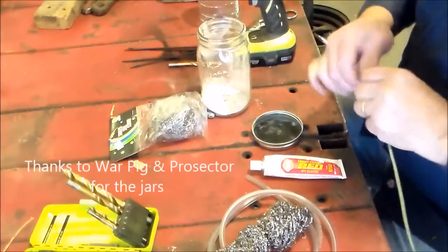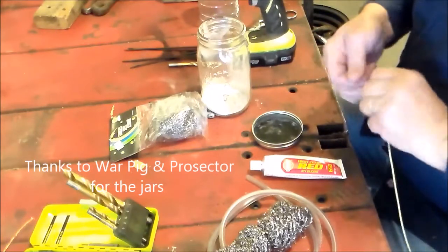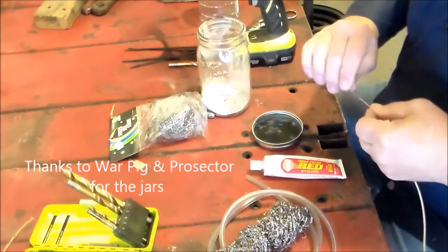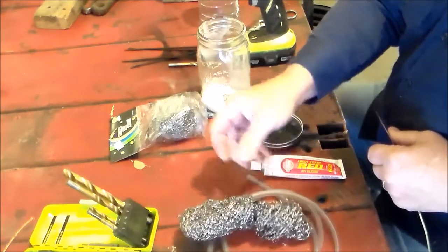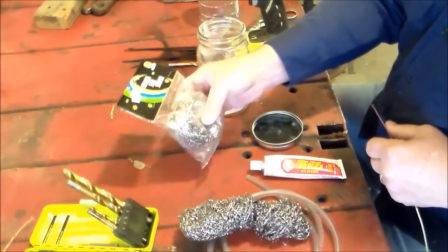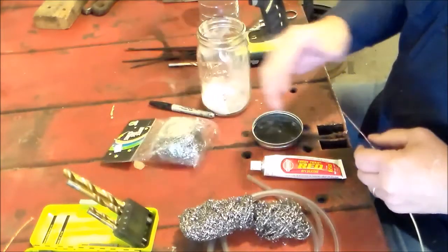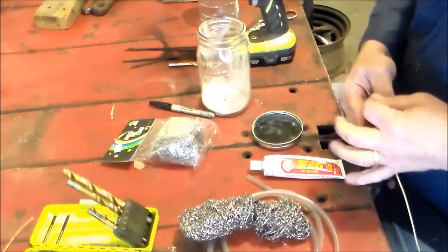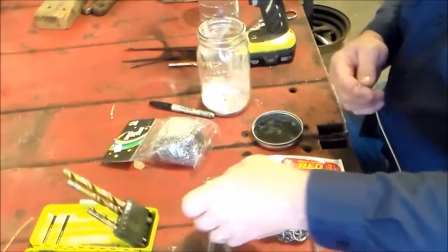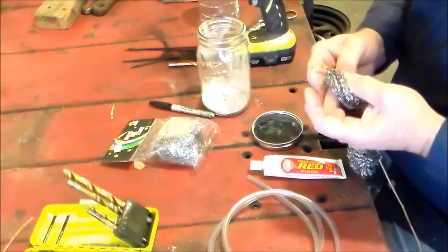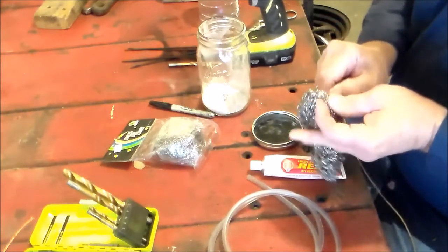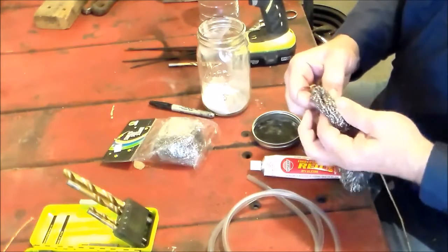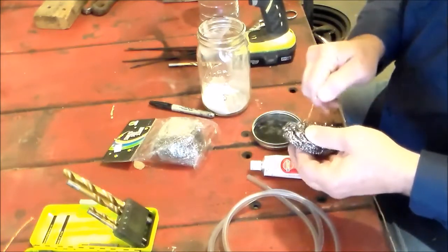Well, we're going to get started on building the hydrogen generator now, and so what I'm starting off with is some stainless steel scouring pads. I bought two packages of them, and you're going to need some wire and some sort of container, and so first I'm going to thread this wire through this scouring pad.